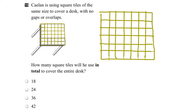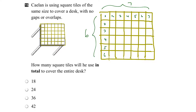There are a number of ways to do this. We could count each individual tile, or we could notice that there are 7 tiles for each row and 6 tiles for each column. So we can either have 6 groups of 7 tiles, or 7 groups of 6 tiles.